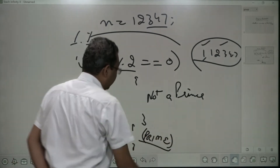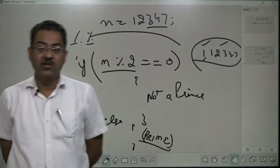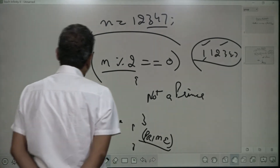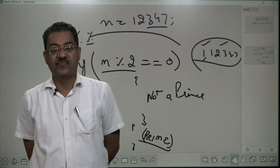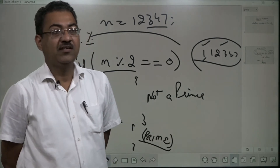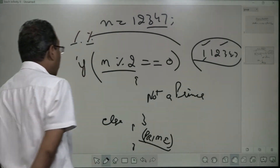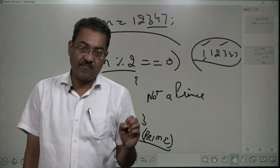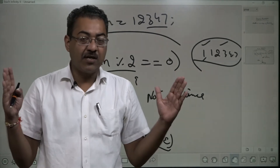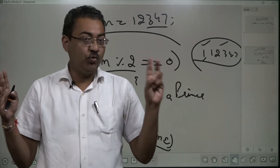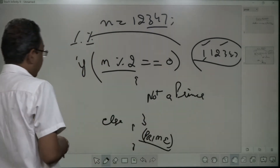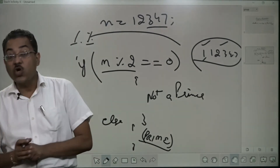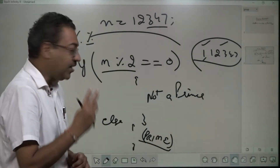But can I write it as prime just by dividing by 2? There are some numbers which are not divisible by 2, but still they are prime. Or they can fall in the category of not a prime. For example, 5 is not divisible by 2, but it is a prime — because it is not divisible by any number between 1 and 5, that is 2, 3, and 4. And if I go for 9, it is not divisible by 2, but it is not a prime — because it is divisible by 3.